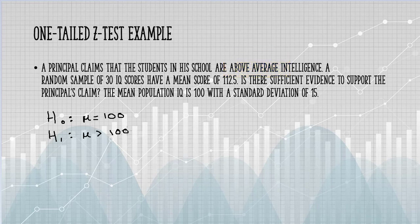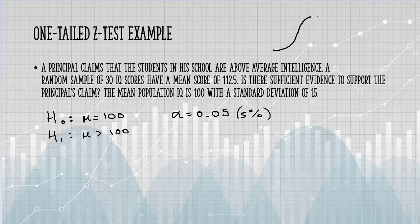The first step is to choose an alpha level. The alpha level isn't given in the question, so we're going to use the standard alpha equals 0.05, which is 5%.